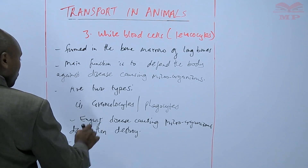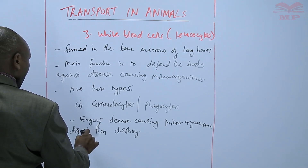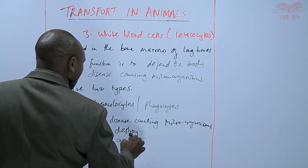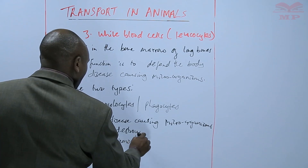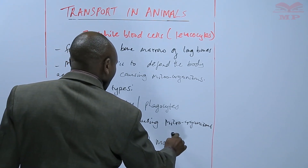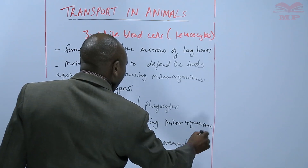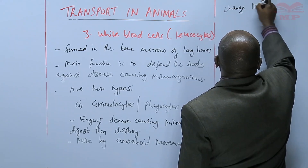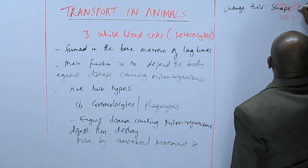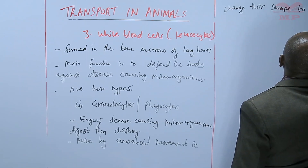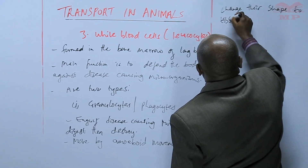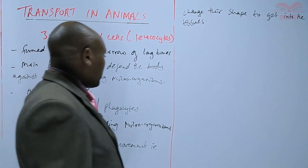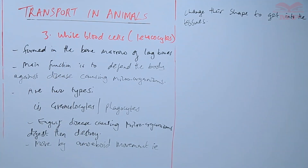These granulocytes move by what is called amoeboid movement, whereby they can change their shape to get into the tissues. That is, if there is an infection in the tissues, they can change their shape so that they can access the tissues where there is an infection.